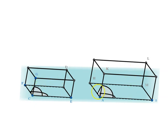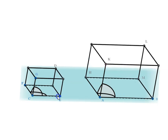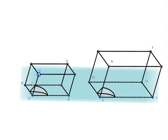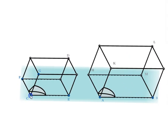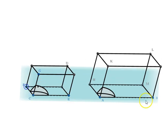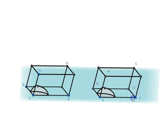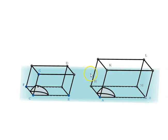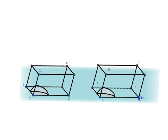Since all the corresponding faces are similar, solid CD is similar to solid AL. This means that if I change the shape of the original solid, the constructed solid changes correspondingly — and I can also change the length of AB. As you can see, the similarity remains irrespective of what AB is changed to.